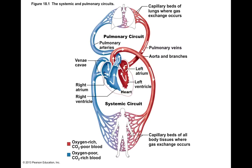Looking at this first slide, what it shows is the basic anatomy of the heart. Its main function is to work as a muscular pump. It's made of cardiac muscle, and what it does is it receives blood from your body and then pumps that blood out to your lungs where that blood can get oxygenated. That blood goes back to the other side of the heart, which then pumps it out to the rest of your body.